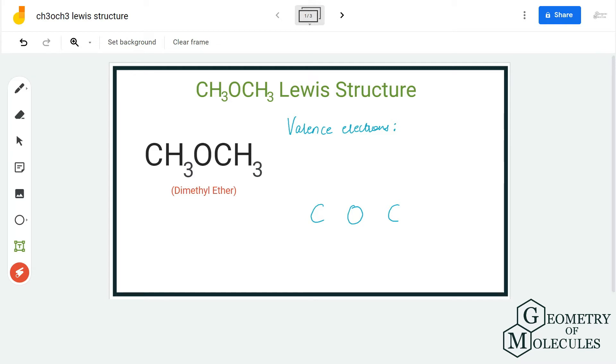To start with, we are going to look at the total number of valence electrons for this compound. Here we have two carbon atoms, six hydrogen atoms, and one oxygen atom. Each carbon atom has four valence electrons, hydrogen has one valence electron, and oxygen atom has six valence electrons.